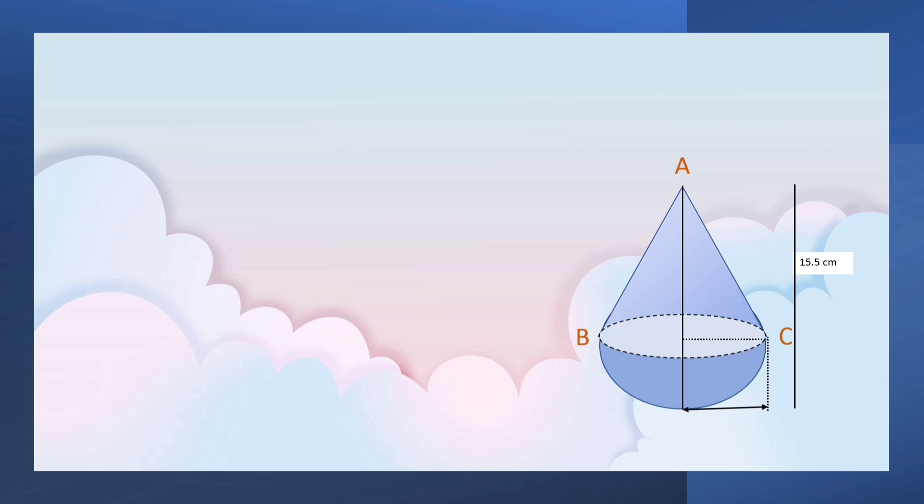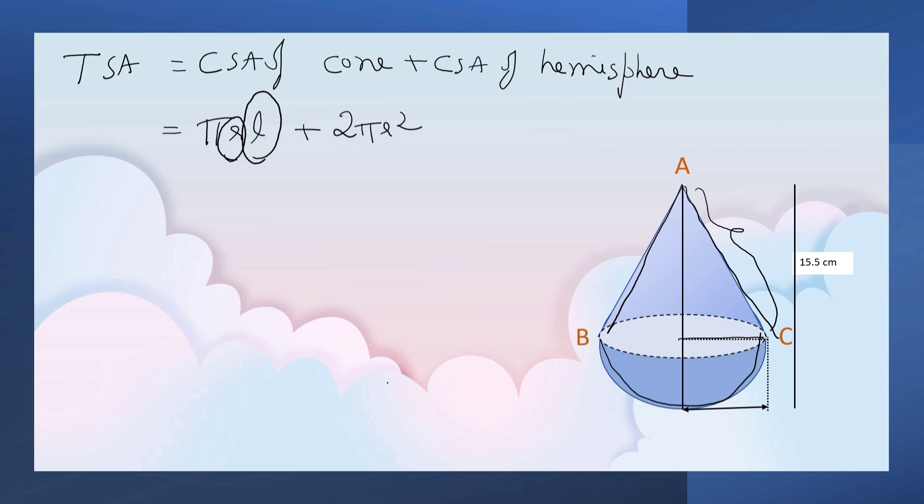We know that total surface area of the toy is CSA of cone plus CSA of hemisphere. The CSA of the cone is πrL and CSA of the hemisphere is 2πr². Here, radius and slant height we are not given. We are given only area of the base of the cone, that is 38.5 cm², and total height.